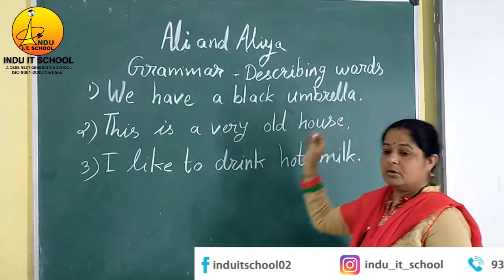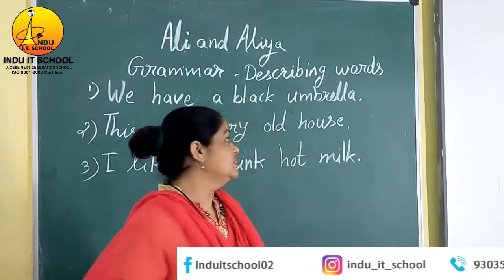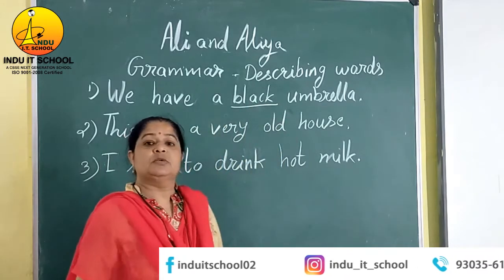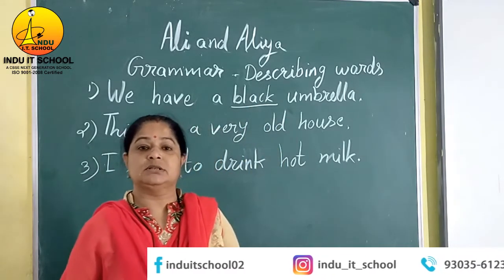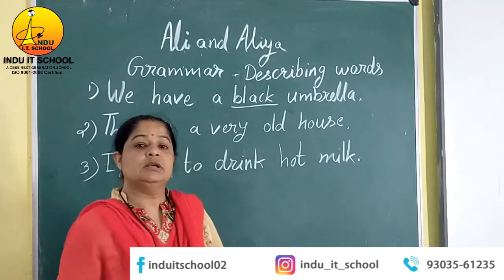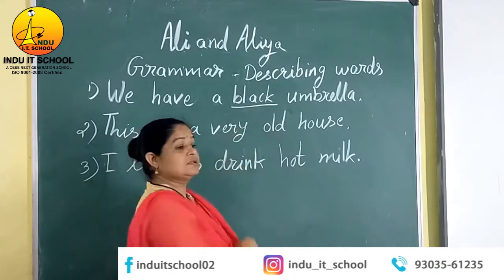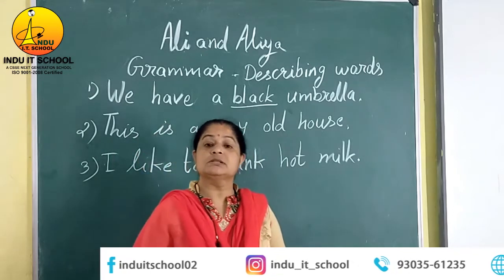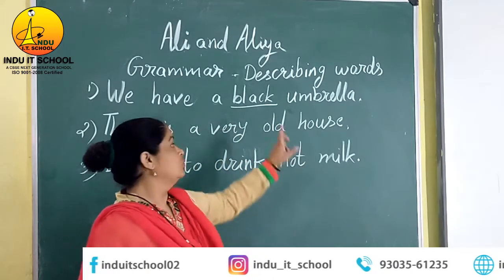You know what an umbrella is, and this word black tells about the umbrella — how it is, what is the color of the umbrella. So here the word black is a describing word, and that is known as adjective word.